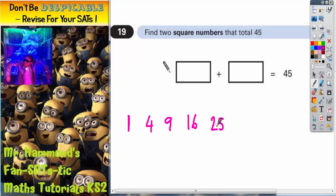square numbers are just when you multiply a number by itself. So, 6 times itself, 6 times 6 is 36, 7 times 7 is 49.